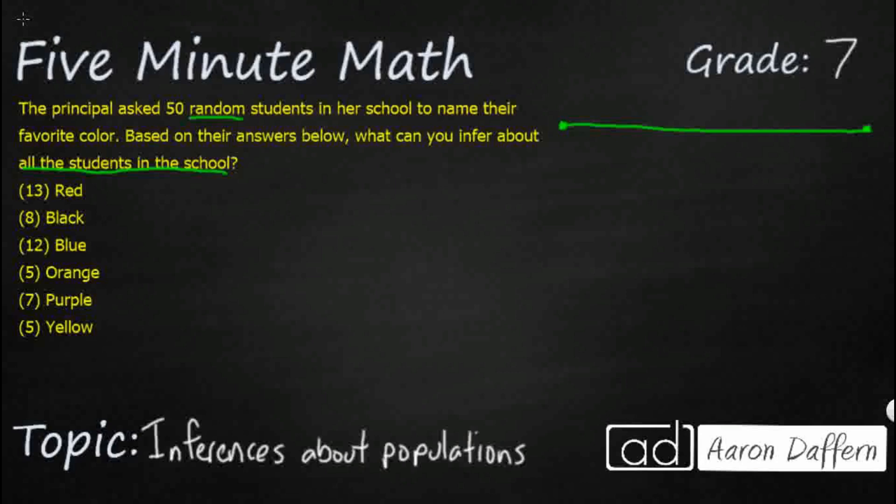Think of a continuum like this. We are probably going to see one end of the continuum right here, not at all, like it is completely unlikely to happen. The other end of the continuum is over here, it's very certain. Those are going to be some hard inferences to make. Most of what we're going to do are going to live right here in between.